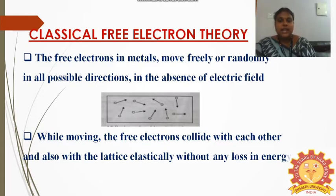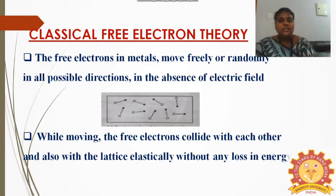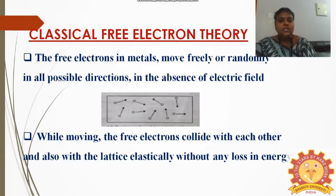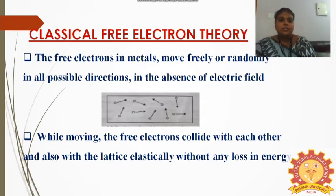This is clearly explained in the diagram. This rectangular box represents a metal. Inside, the small circles represent the electrons and the arrows represent the direction of movement of electrons. According to the first point, the free electrons present inside the metal move randomly in all directions without any electric field. While moving, they can collide with each other and also collide with the lattice or the boundary of the metal without any losses in energy.